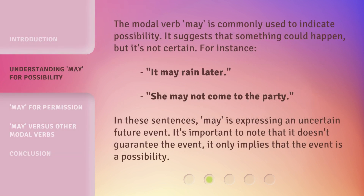The modal verb 'may' is commonly used to indicate possibility. It suggests that something could happen, but it's not certain. For instance: 'It may rain later.' 'She may not come to the party.' In these sentences, 'may' is expressing an uncertain future event. It's important to note that it doesn't guarantee the event — it only implies that the event is a possibility.